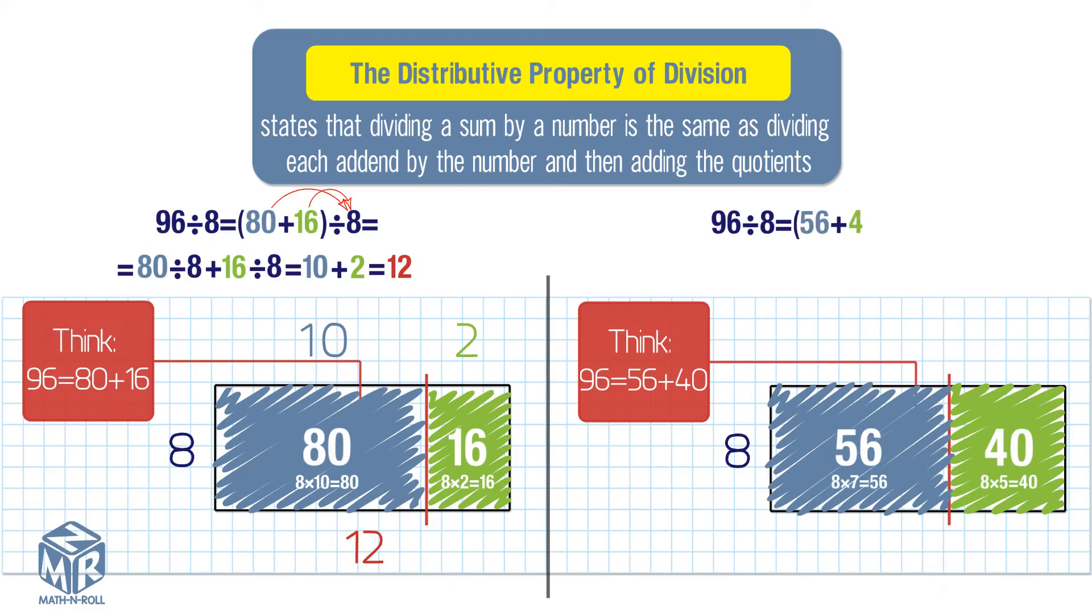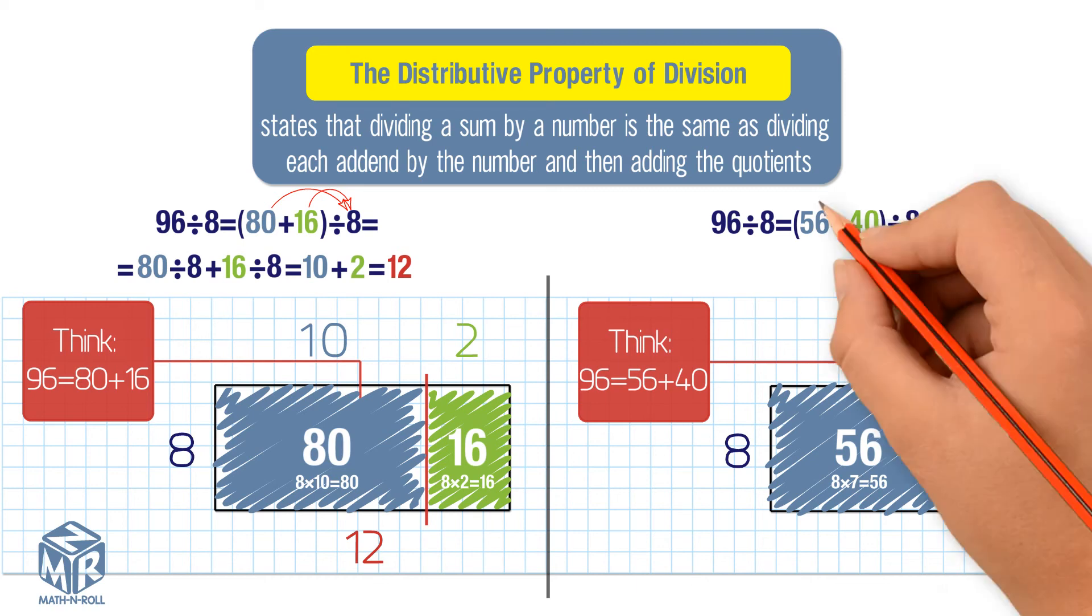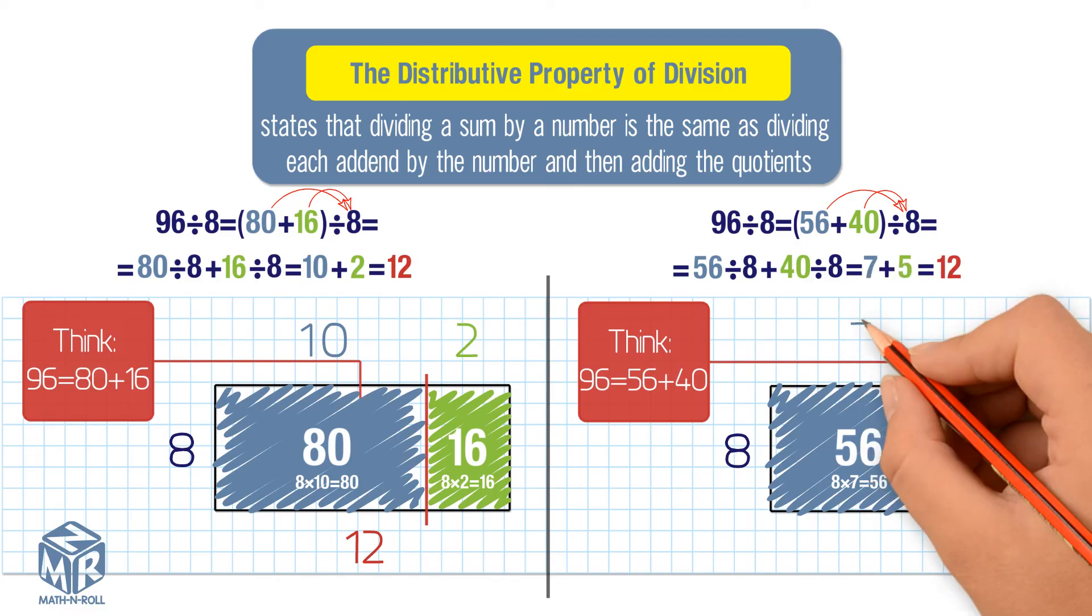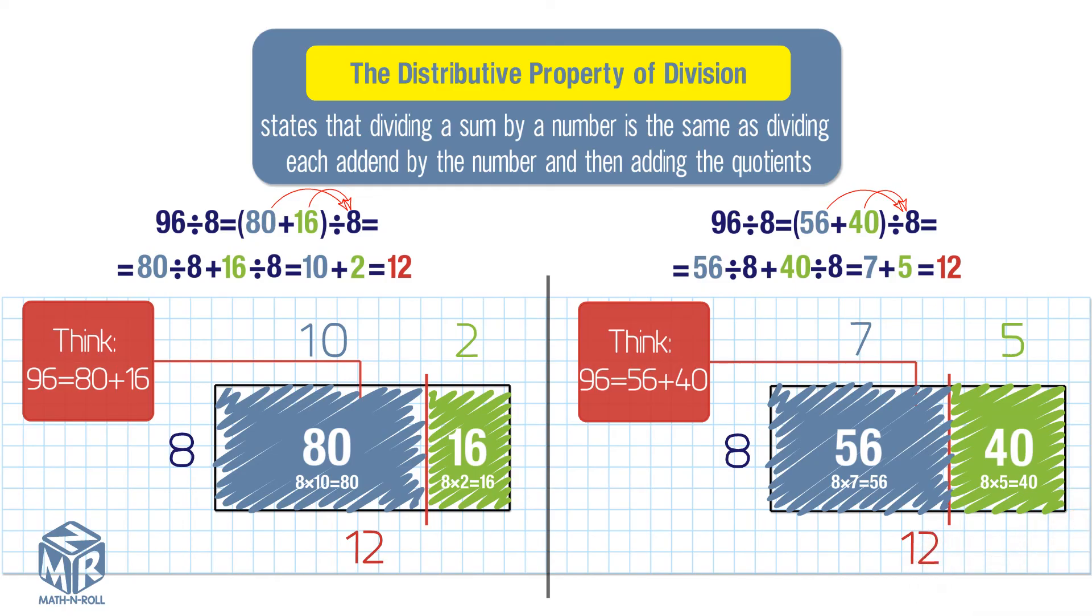Use the distributive property to divide. Divide each addend by 8. 56 divided by 8 plus 40 divided by 8. Add the partial quotients. 7 plus 5 equals 12. So 96 divided by 8 equals 12.